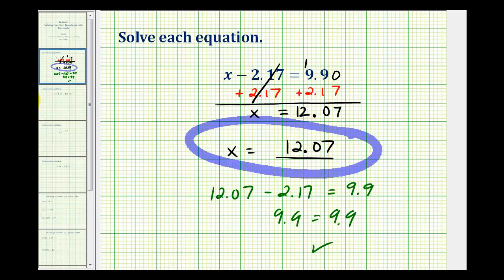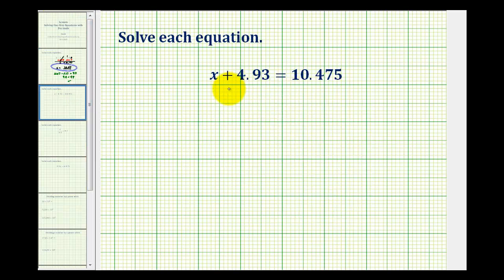Let's take a look at another example. Now this example is almost exactly the same as the previous example, except now, in order to isolate the variable on the left side of the equation, we'll have to perform the opposite operation of adding 4.93 to both sides of the equation. Well, the opposite of plus 4.93 would be minus 4.93.